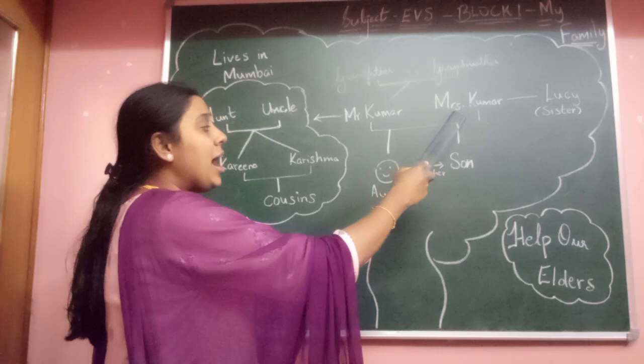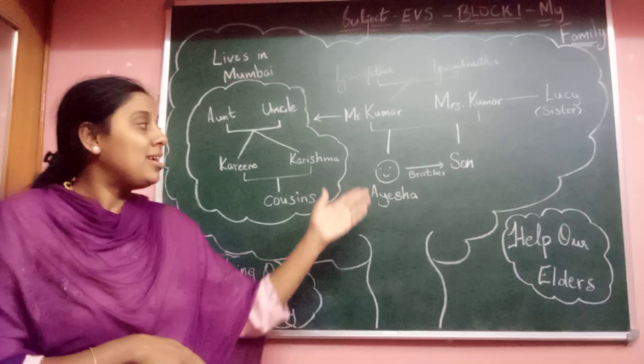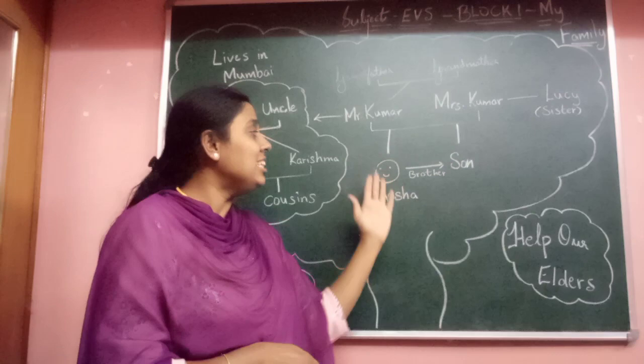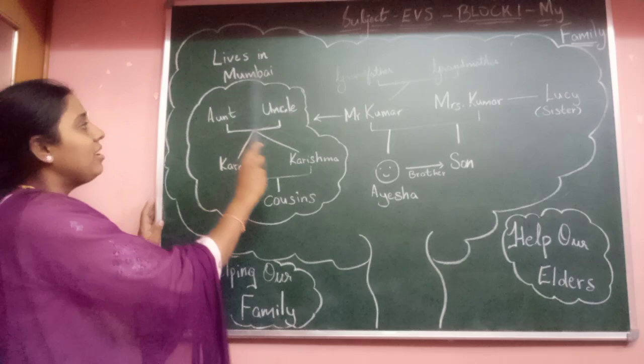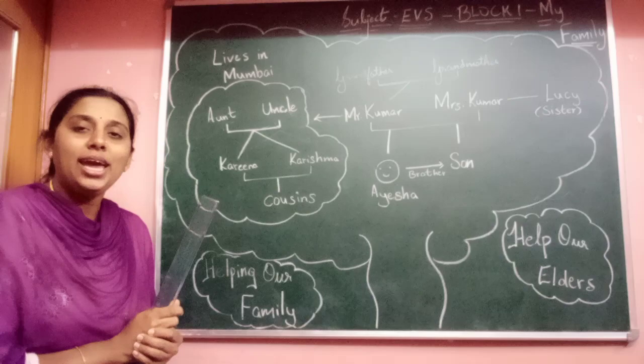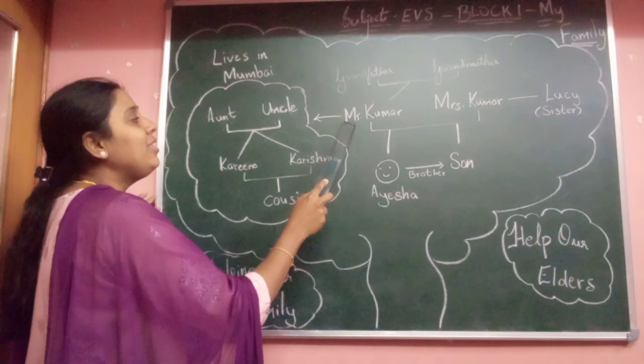Mrs. Kumar, Aisha's mother, has a sister named Lucy. Lucy is Aisha's aunt and she also lives with them. Mr. Kumar also has a brother — so he is not the only son to his parents.